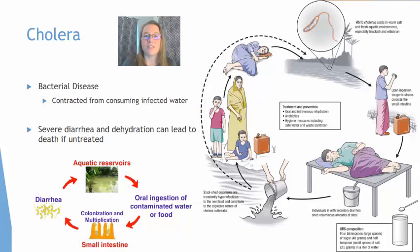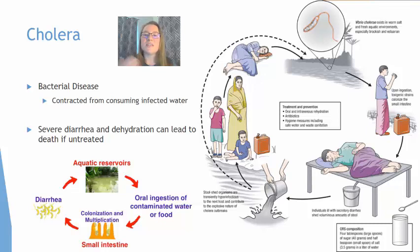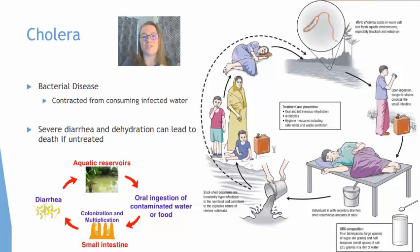Cholera is a bacterial disease contracted from consuming infected water, which can lead to severe diarrhea and dehydration. If untreated — it can be treated with antibiotics — this dehydration can lead to death. It's a cyclic disease: consuming infected water causes symptoms, and that waste goes back into the water supply, particularly in areas without proper sanitation, which then becomes someone else's drinking water source.